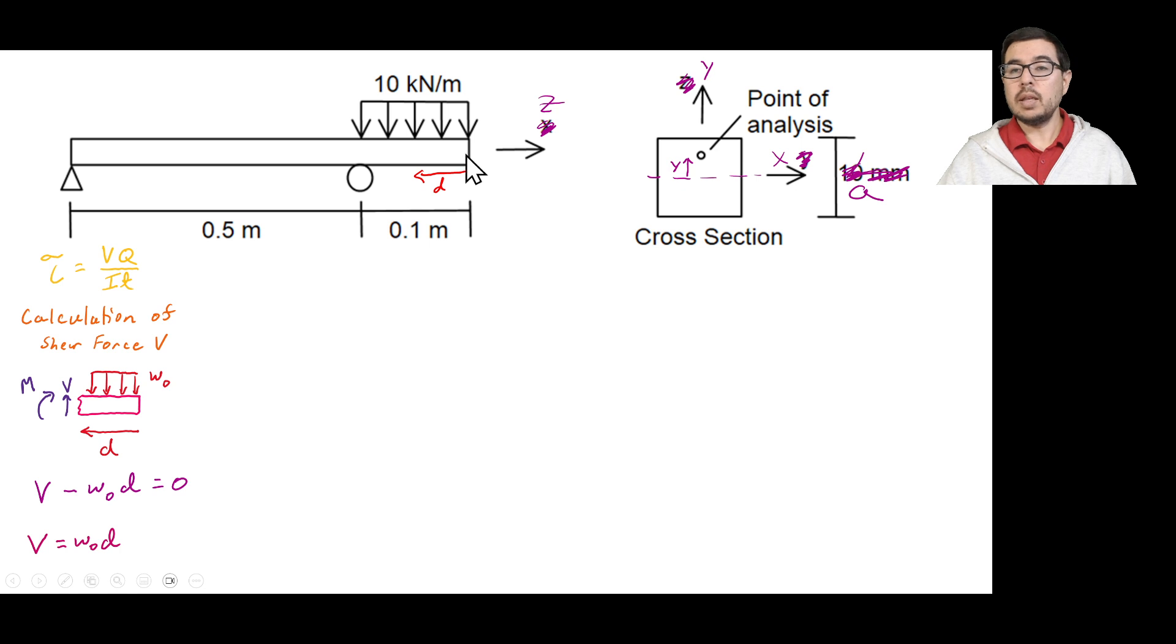So at the right side, right end, it would just be zero. But as it moves toward this roller, we see that it will meet up with w naught d, whatever that length is. Because in this picture, it's drawn as 0.1 meters. But it's given in this problem that we're operating or we're thinking about doing analysis at some distance d from the right hand side.